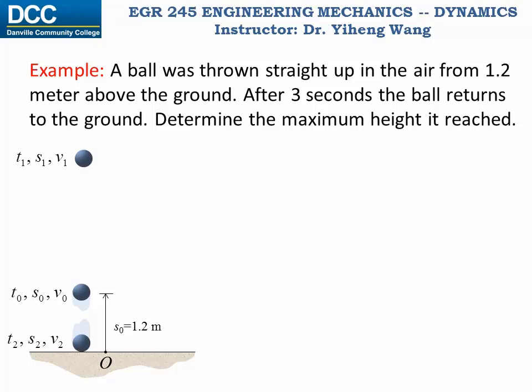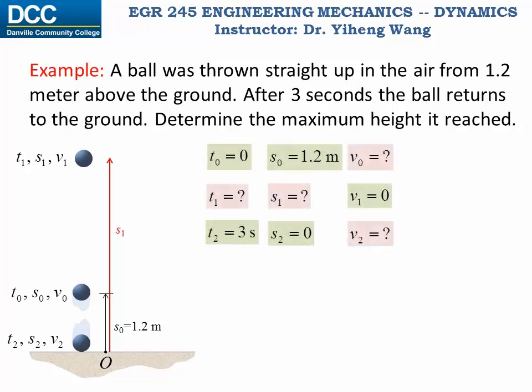And what we are asked to solve, the maximum height of the ball is s₁. So let's take a look at what we know and what we don't. Here I listed the known coefficients with green backgrounds and unknown ones with pink backgrounds. Particularly, although it was not given in the problem statement that v₁ is 0, we know that from basic knowledge of physics.